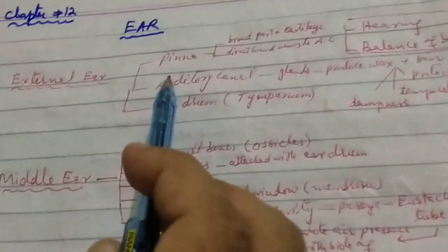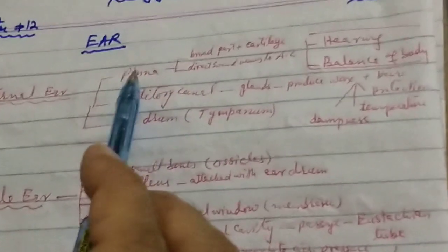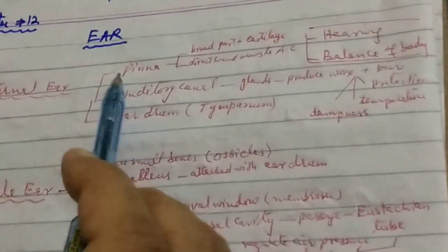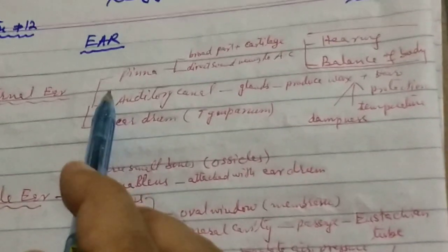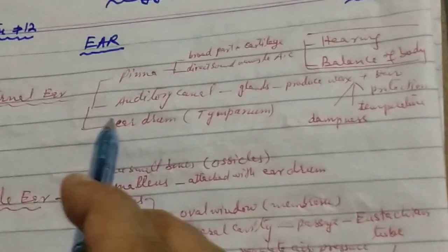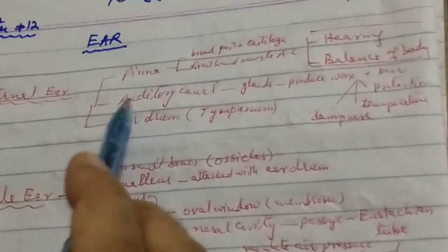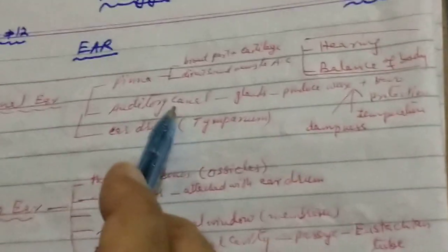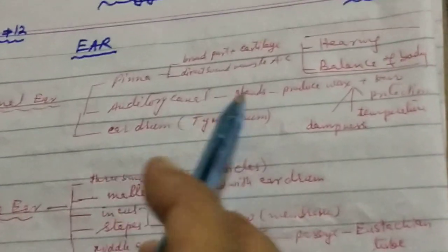In the same way, the external ear has three parts like pinna, the outer ear, and the auditory canal. The auditory canal has a little bit of glands which produce wax.